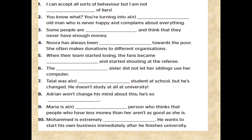Hello again! Let's check your answers. 1. I can accept all sorts of behavior but I am not tolerant of liars. 2. You are turning into an irritable old man who is never happy and complains about everything. 3. Some people are greedy and think that they never have enough money.